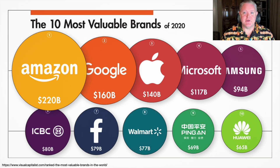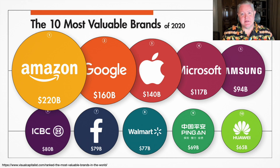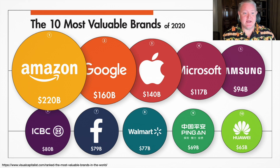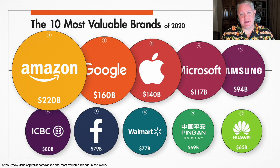So let me show you an example. This first example is from Visual Capitalist and is showing the top 10 most valuable brands in 2020. You can see the data points — here are the top 10 valuable brands, and they're all sized circles corresponding to the value of each of those brands.